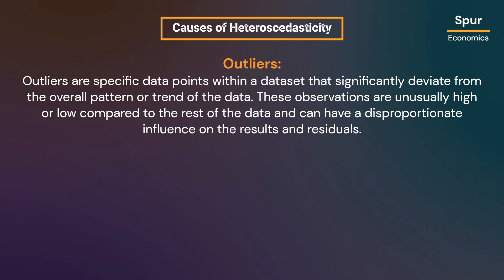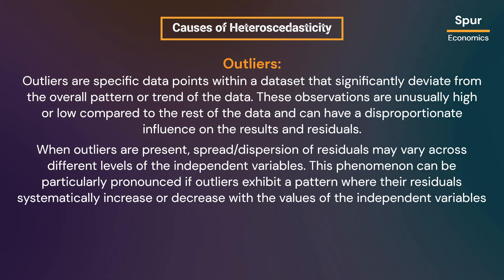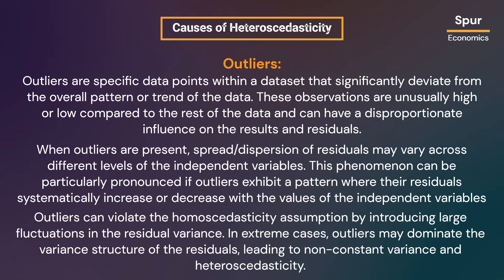Outliers are specific data points that significantly deviate from the overall pattern or trend of the data. These observations are unusually high or low compared to the rest of the data and can have a disproportionate influence on results and residuals. When outliers are present, the spread of residuals may vary across different levels of the independent variables, particularly if outliers exhibit a pattern where their residuals systematically increase or decrease. In extreme cases, outliers can dominate the variance structure of residuals, leading to non-constant variance and heteroscedasticity.